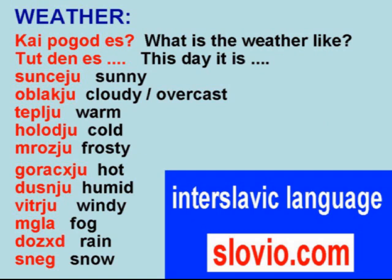Weather: Kai Pogodes? — What's the weather like? To den es — This day it is: Sunseu — Sunny. Oblakiu — Cloudy. Tepliu — Warm. Cholodiu — Cold. Mroziu — Frosty. Goraciu — Hot. Dusnu — Humid. Vitriu — Windy. Mgla — Fog. Dozd — Rain. Sneg — Snow.